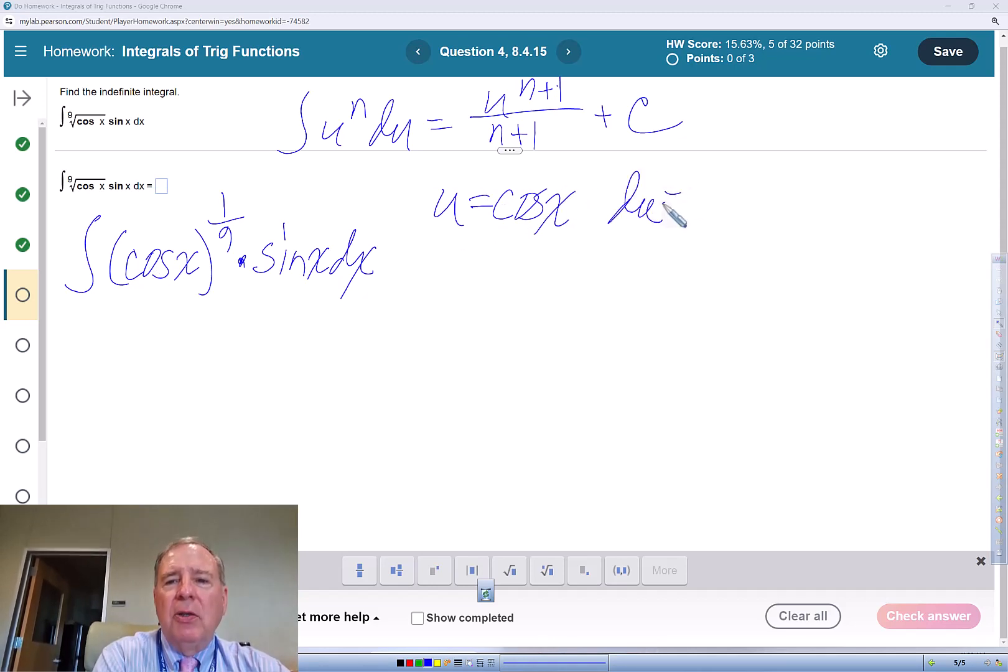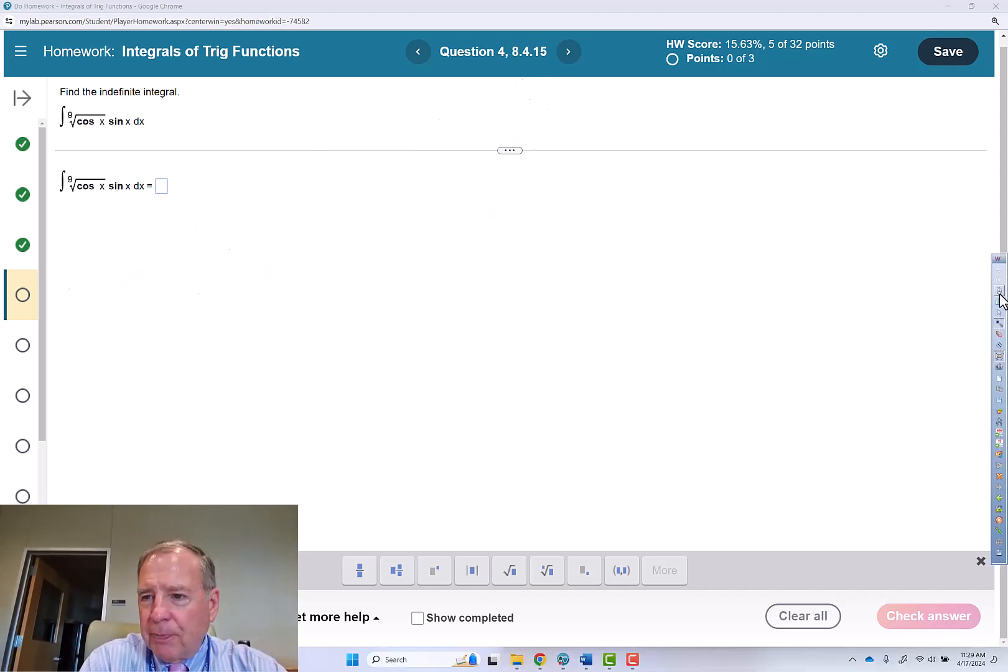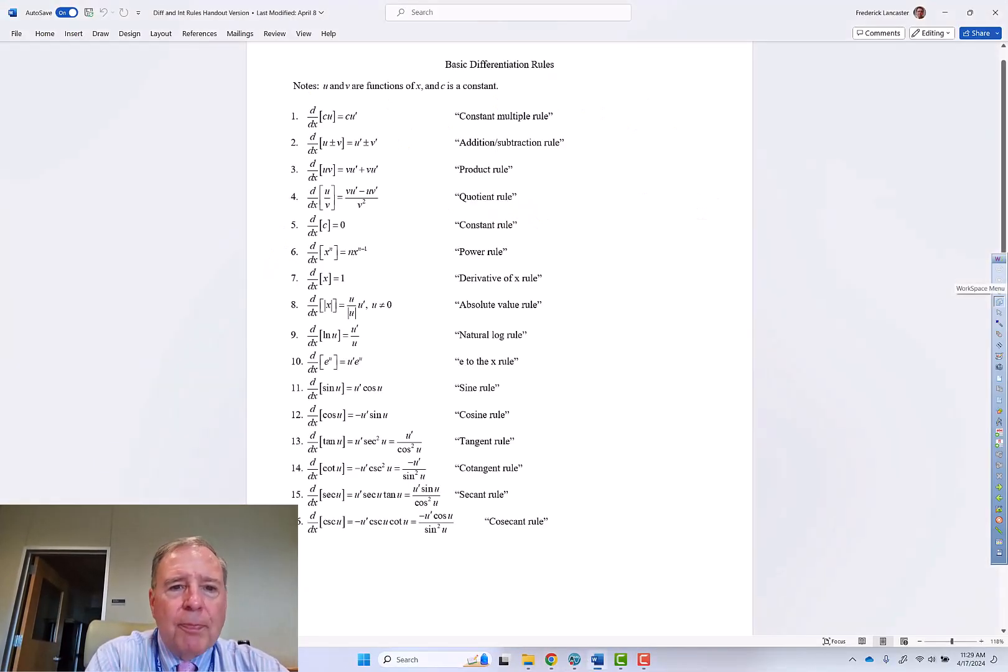So du is the derivative of cosine times dx. And if we look at our derivative rule, the derivative of cosine is negative sine of u times u prime, but we're not using the chain rule version for this problem.